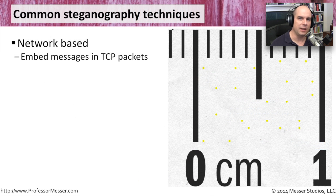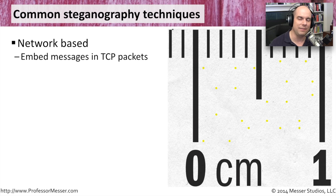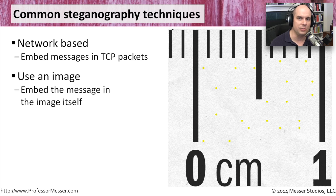There are a number of ways you can implement steganography in your environment. One way is to hide the data within the network packets themselves. We can't really see network packets — they go by so quickly and there are so many of them. But if you embed just one character inside a TCP packet as it travels from one device to another, you could send many, many packets and it would be very difficult to see any hidden data unless you knew exactly what to look for. Another way is to use an image — taking a picture and embedding messages, images, or documents inside it. A very unique way to hide information right in plain sight.